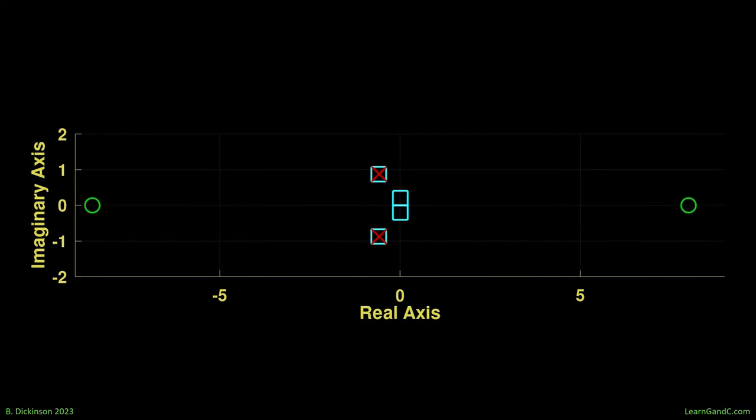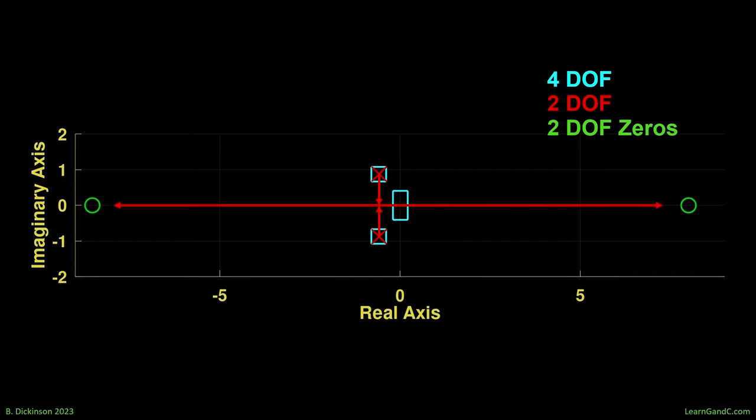Looking at the root locus, we can see the right-half plane zero of the short period. Also shown is the blue short period and fugoid modes. And then the extracted short period in red. A good approximation. So, as integral error gain increases, we know poles will approach zeros. Hence, the right-half plane zero may attract the closed-loop poles. This is a concern.